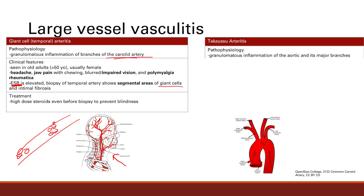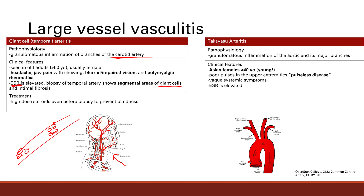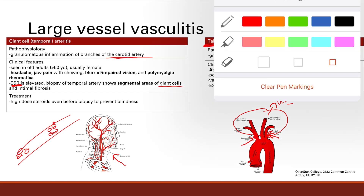Next is Takayasu arteritis — inflammation of the aorta and its major branches. The people you see this in are Asian females younger than 40. The name sounds Asian, so that helps you remember. In contrast to giant cell arteritis, which affects older patients, Takayasu affects younger patients. What you see here is poor pulses in the upper extremities — this is called pulseless disease.